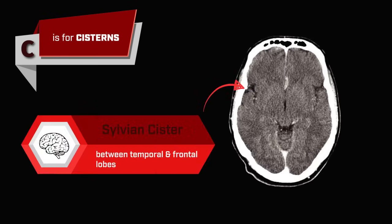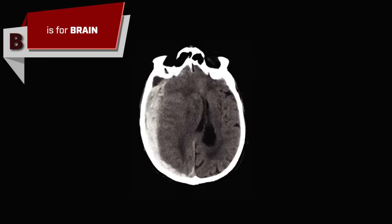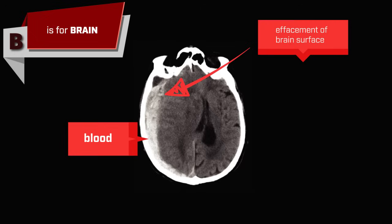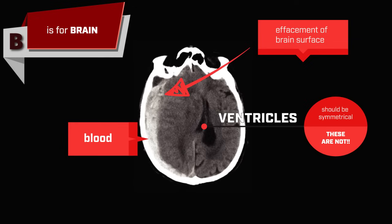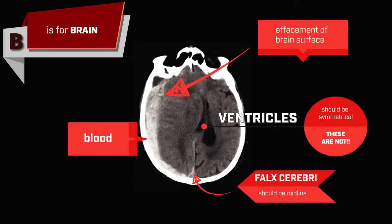B is for brain. Look for the presence of blood, the effacement of the brain surface, and the symmetry of the cisterns and ventricles. Additionally, the falx should be midline.